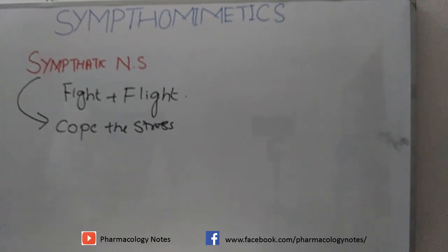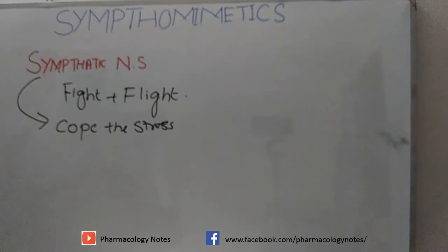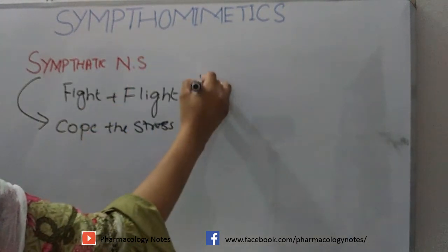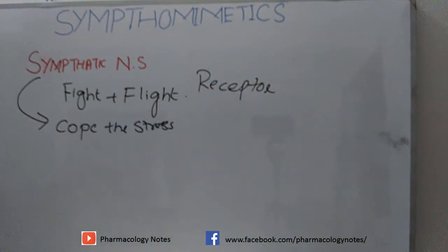If the same neurotransmitter or the same drug is given throughout the whole body, how does the body recognize that some organs should be activated while some should be inhibited? The answer is: this occurs because of the distribution of receptors. Due to the distribution of sympathetic nervous system receptors, there is a difference in the response of each particular organ.